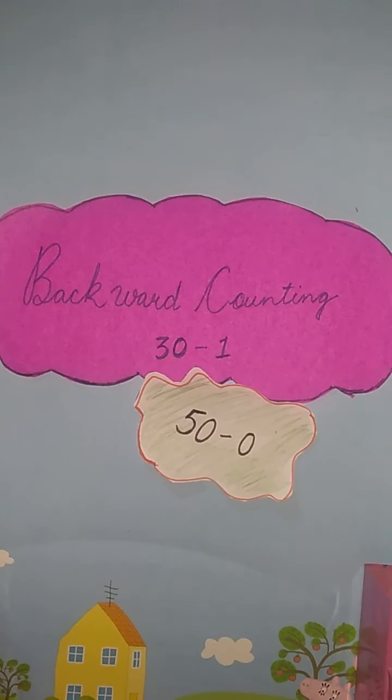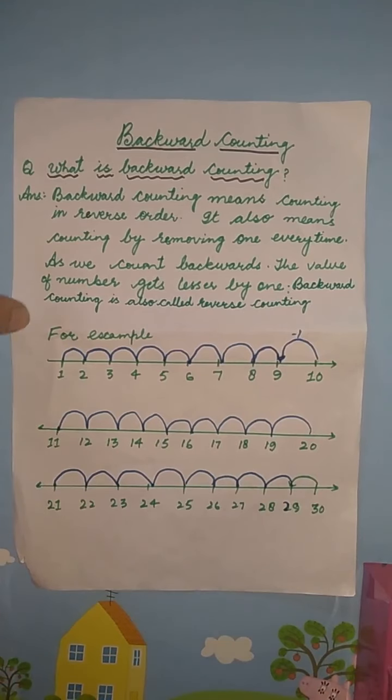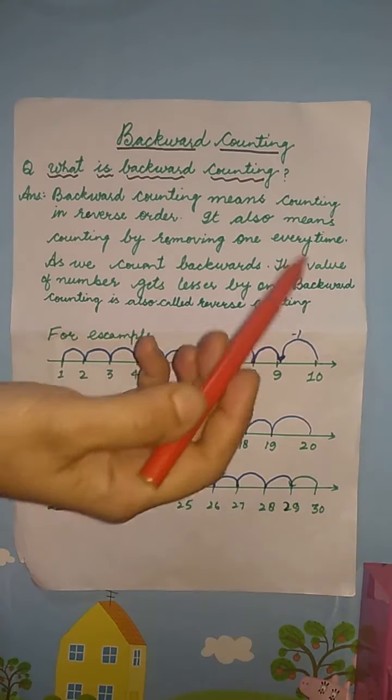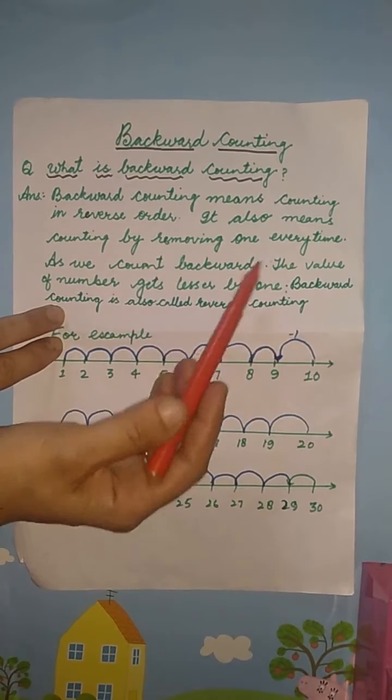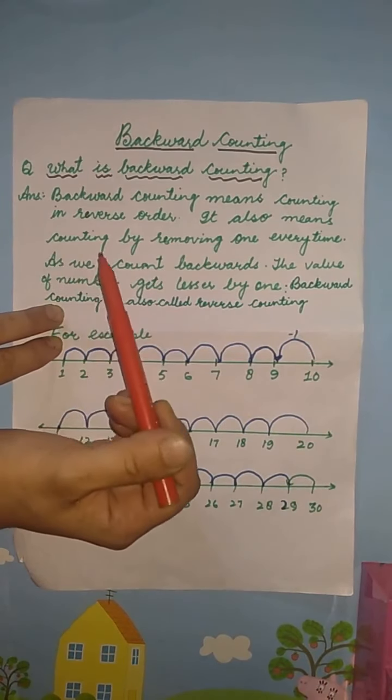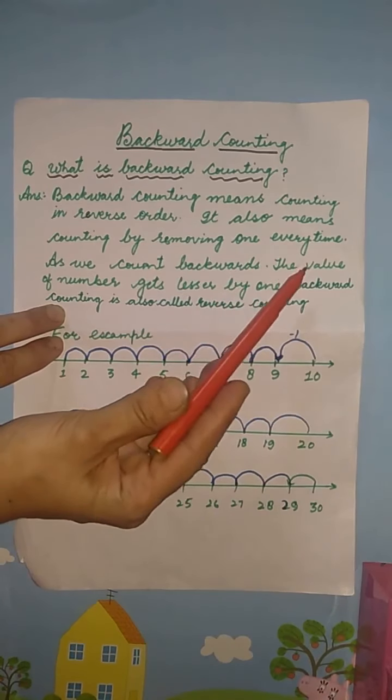Can you tell me what backward counting is? Yes, absolutely correct. Kids, read aloud with me. Backward counting means counting in reverse order. It also means counting by removing 1 every time.